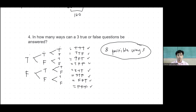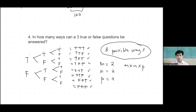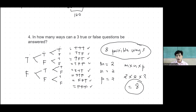Let's use the formula. For each of the 3 items, we have 2 choices — true or false. So m equals 2, n equals 2, and p equals 2. Multiplying m times n times p: 2 times 2 times 2 equals 8. So that is the idea of the fundamental principles of counting — it helps us know all the possible outcomes and probabilities of a given situation.